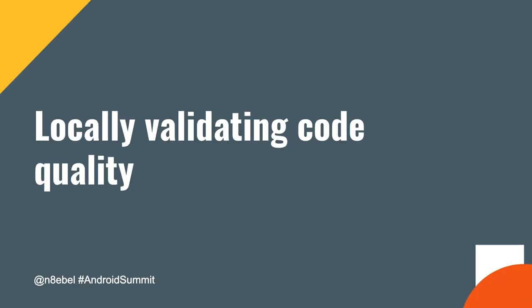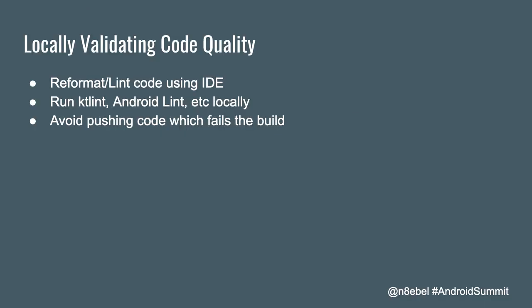What we'd like to do is avoid failing our build if code quality checks are not successful — especially because we can validate those locally. We're going to look at a couple of ways to validate code quality checks on our local machine before pushing them up to the remote repository. With KT Lint or Android Lint, a lot of those checks we can reformat or run from the IDE itself, and all these different types of checks we can generally run from the command line as well.